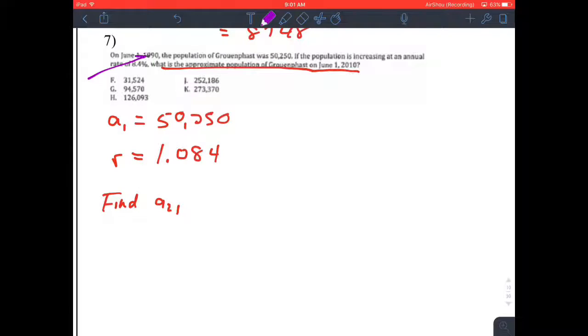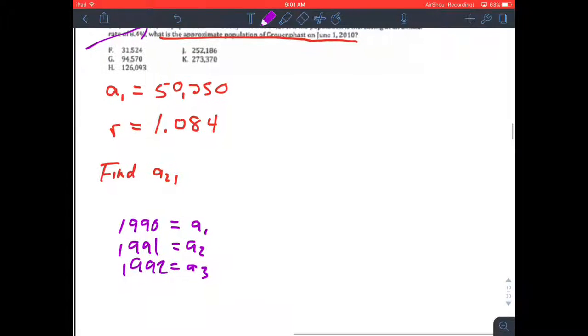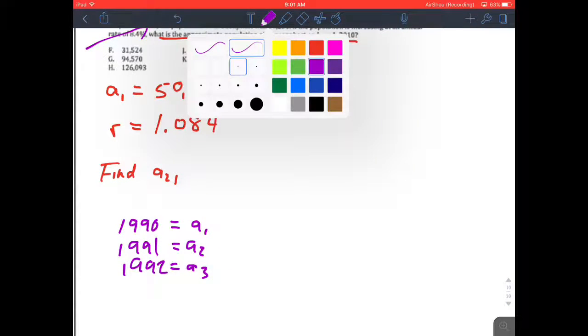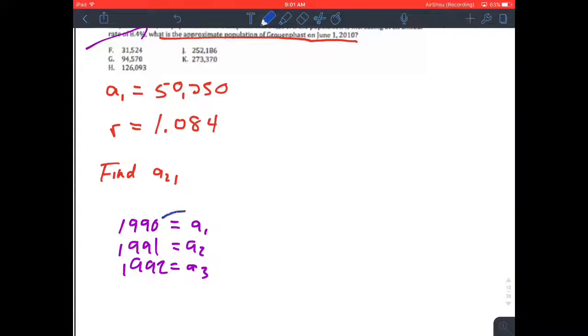If 1990 is A to the 1st, that means that 1991 is obviously A to the 2nd, and 1992 is A to the 3rd. Notice that whatever number you're on, whatever year's digit you're on, the term you're on is 1 more.